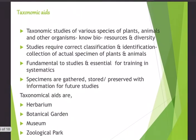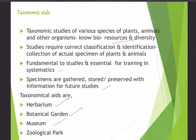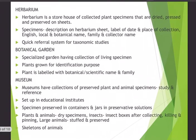Phylum Chordata includes classes of fishes, Amphibia, Reptilia — all sharing the common feature of the notochord. Division Angiospermae includes classes Dicotyledonae and Monocotyledonae. Finally, the highest taxon is the kingdom — plant kingdom or animal kingdom. To correctly place organisms, we need the help of taxonomical aids. Taxonomic studies of various species require correct classification, identification, and collection of actual specimens.